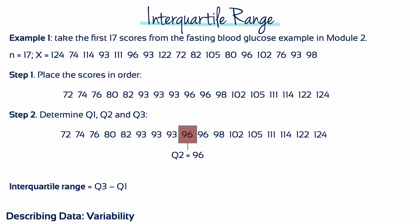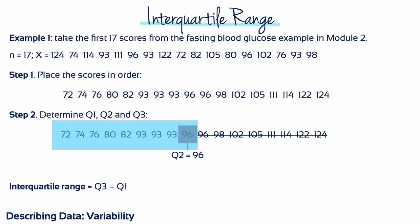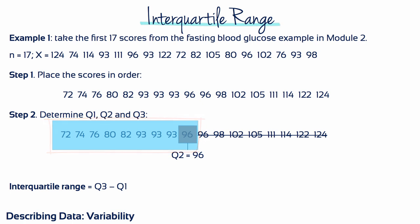Let's go through a couple of examples of how to calculate interquartile range from start to finish. It's slightly different depending on whether you have an odd or even number of scores. Example 1: let's take the first 17 scores from the fasting blood glucose example in module 2. The first step is to place these scores in order from lowest to highest. We then calculate Q2, which is the same as finding the median — so Q2 equals 96, the middle value. To identify Q1, we focus on the scores from the first score up to and including Q2. Q1 is the median of this subset. There's an even number of scores in the subset, so Q1 is the mean of the middle 2: 80 plus 82 divided by 2 equals 81.